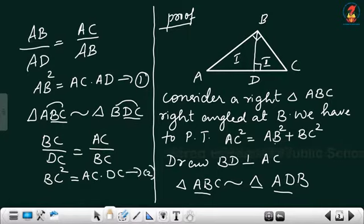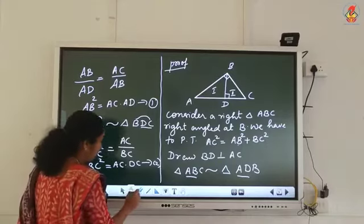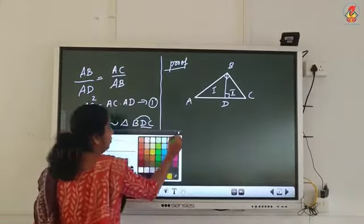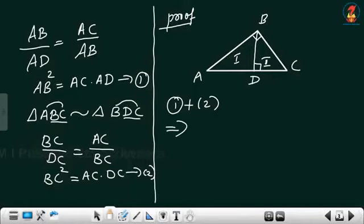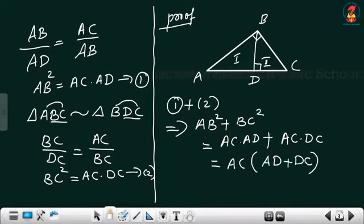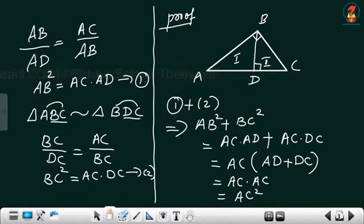When you add equations 1 and 2, AB² + BC² = AC × AD + AC × DC. We can take AC out: AC × (AD + DC). Since AD + DC = AC, this becomes AC × AC = AC². So the required result is AB² + BC² = AC².